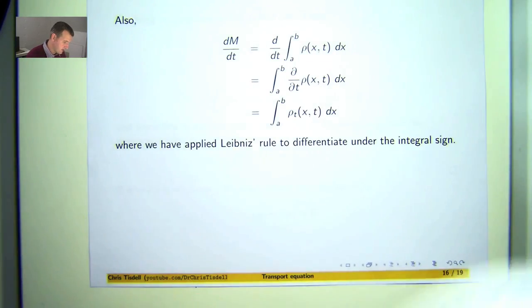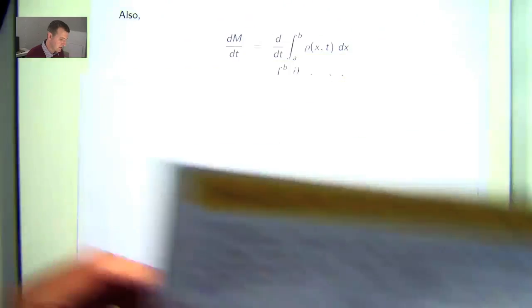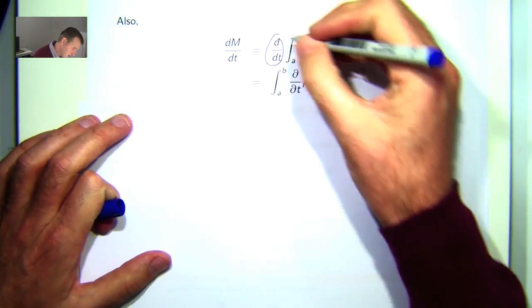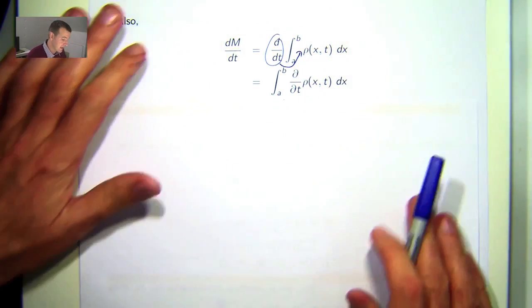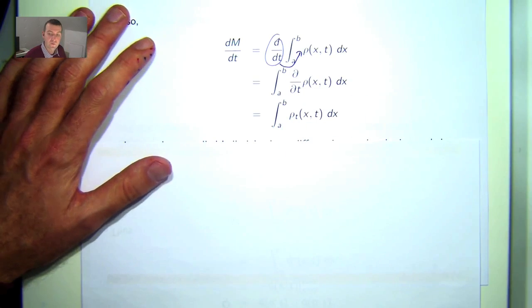And then if I differentiate this expression with respect to t, I'll get this. And then if I push the derivative inside the integral by applying Leibniz rule for differentiating under the integral sign, I'll get a partial in there. Just write that as rho sub t.